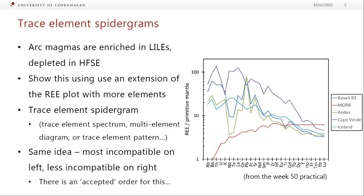We've normalised them. In this case you can't use chondrite because some of these elements are more volatile than others — when we went from chondrites representing the solar nebula to making the Earth, we would have lost some volatile elements. So if you do these against chondrite it's just a mess. You have to have an estimate for primitive mantle for a trace element spidergram — that's to smooth the odd/even spikiness. But you can see we still have quite a spiky pattern. This order of trace elements is more or less set and corresponds roughly to what is most incompatible in mid-ocean ridge basalt melting compared to least incompatible.